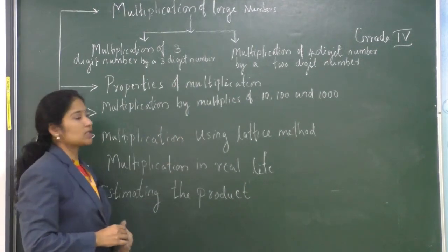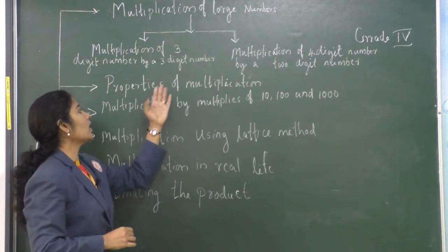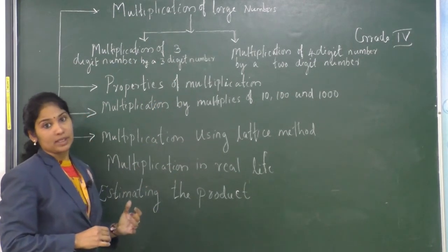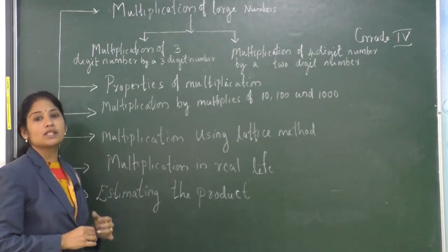That we illustrated just now. Our next topic is properties of multiplication. Here, we learn order property, grouping property, and also we learn multiplication by 1 and multiplication by 0.